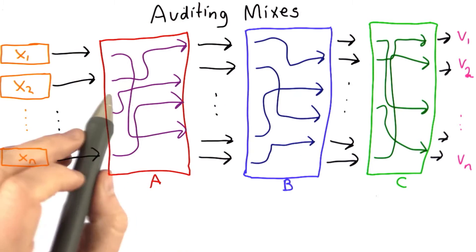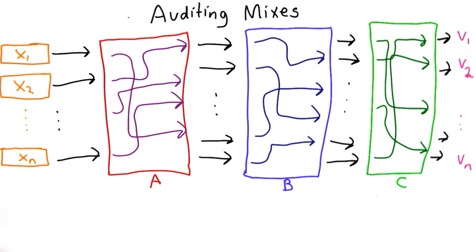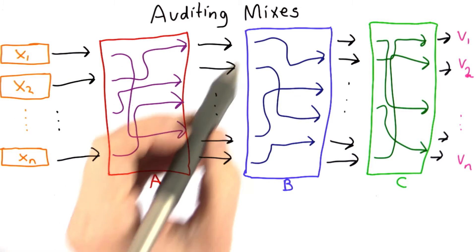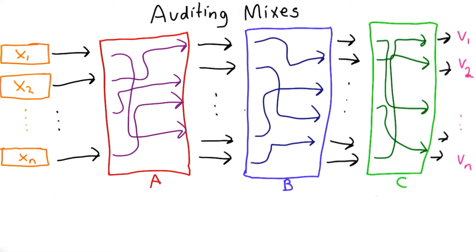So the other approach for solving this is what's known as an auditing MixNet. And the idea here is that each participant in the MixNet can audit some of the outputs of the next step.